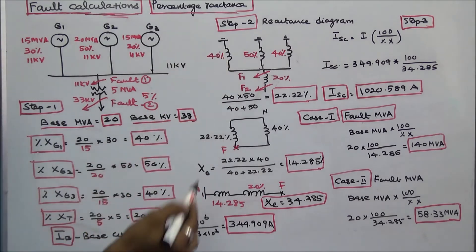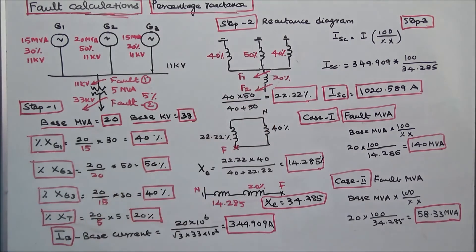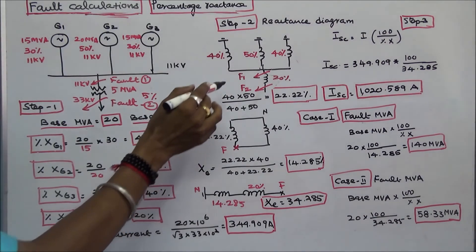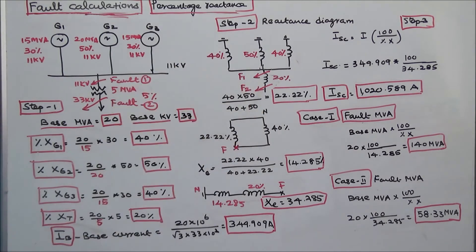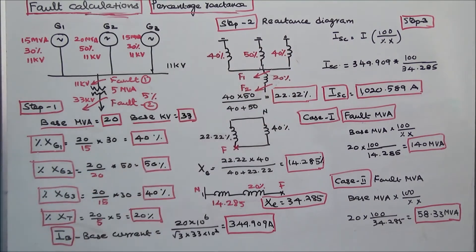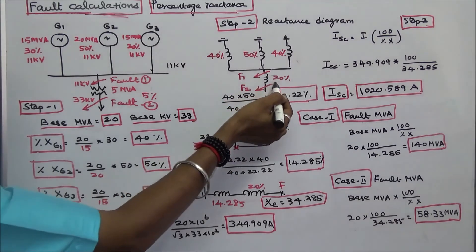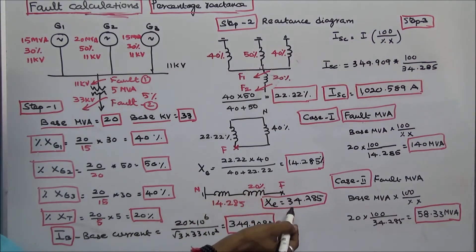Next, I calculate the total reactance between the neutral point and fault point F2. In the first case, we calculated the fault current at F1. Here, the three generator reactances are connected in parallel, giving an equivalent reactance of 14.285%. The 20% transformer reactance is connected in series with the 14.285%, so the total reactance between the neutral point and fault point F2 is 34.285%.